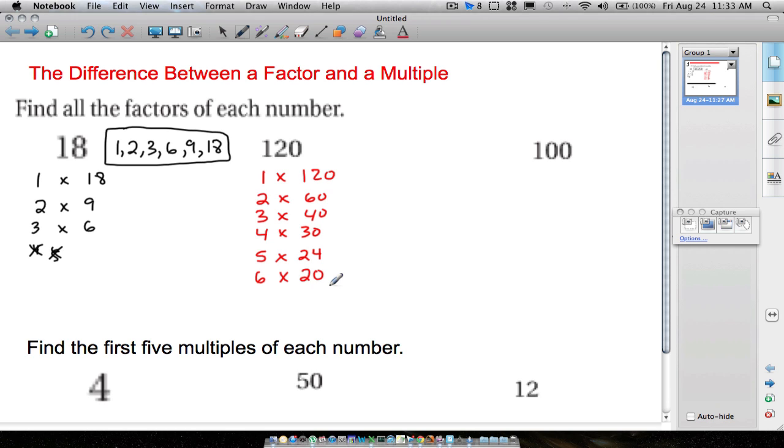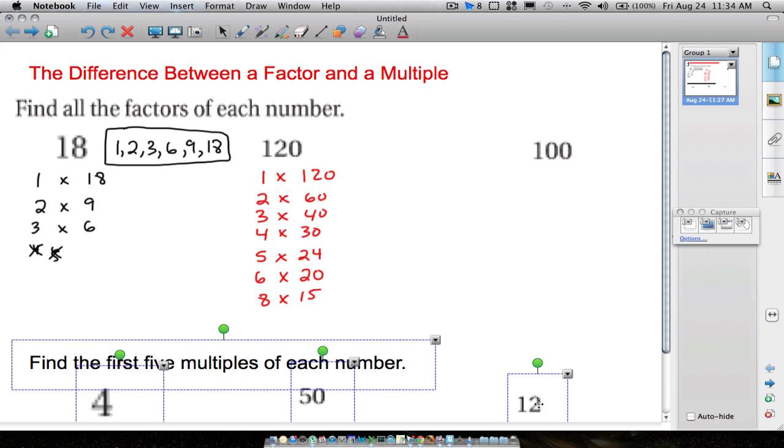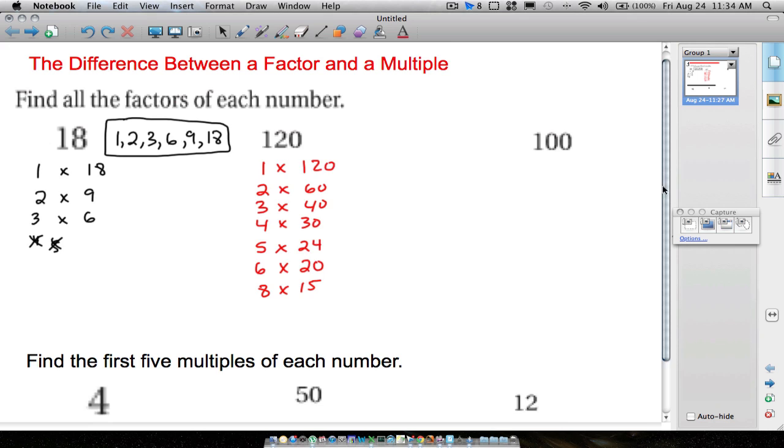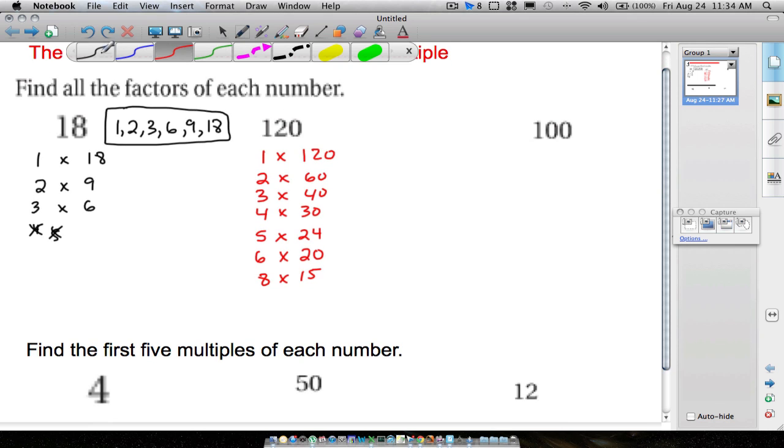Seven will not work. You can do a little bit of long division, you will get a remainder. What about eight? Eight does work. Eight times 15 will give you 120. If you test nine, you'll get a remainder, but 10 will work. 10 times 12 will give you 120. And the next number would be 11, but 11 will not go into 120. We will have a remainder, so it's not a factor. And then our next number would be 12. Notice that 12 is already used.